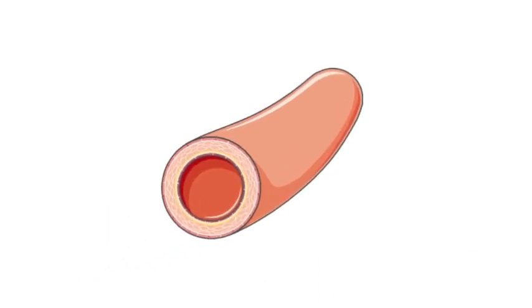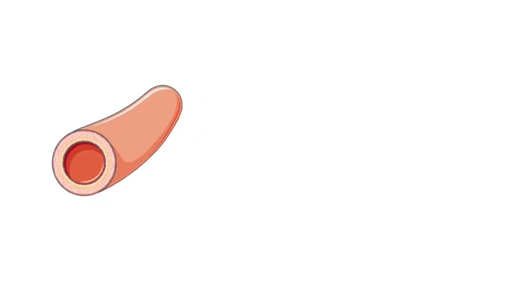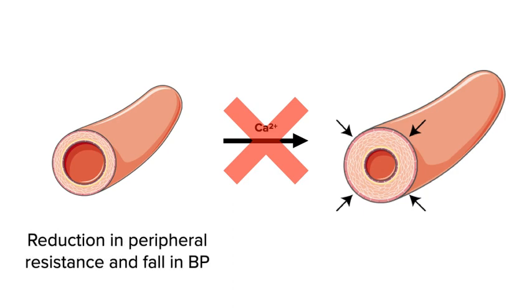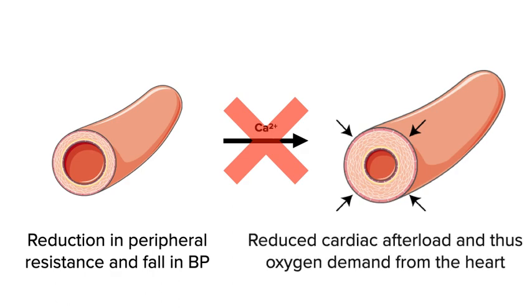First let's look at the blood vessels. Under normal circumstances, calcium influx into myocytes causes myocyte contraction, thus increasing total peripheral resistance and blood pressure. If you block calcium channels, you prevent this contraction, getting a fall in peripheral resistance and a fall in blood pressure. At the same time you get reduced cardiac afterload, reduced oxygen demand from the heart, and thus improved symptoms in stable angina. It really is that simple.